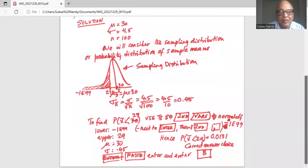My upper boundary is I'm stopping at 29. My mean is 30. My standard deviation is 0.45, not 4.5. It's 0.45 because I'm considering the sampling distribution whose standard deviation is lower than the standard deviation of the variable.